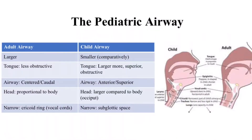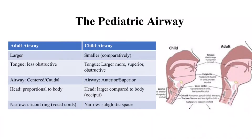There are important differences between the adult and pediatric airway. The adult airway is larger, the tongue is less obstructive, the airway is more centered, the head is proportional to the body, and the narrowest point of the airway is the cricoid ring or the vocal cords.